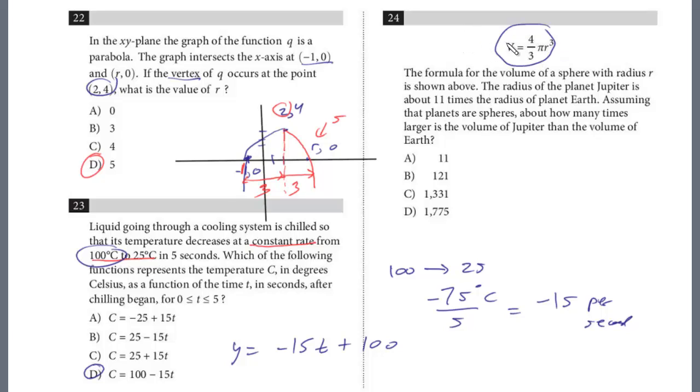Think about whatever we've got for Earth, we can figure out the volume. But we know that Jupiter is going to be 11 times this. So 11 times this equals Jupiter. And whenever they ask this, it's always going to be with a square or a cube. You don't really even have to solve it. Whatever Earth is, I'm just going to use the formula and call it Earth.